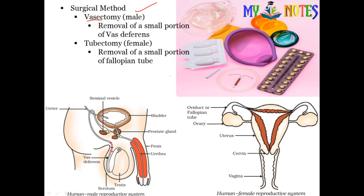The second surgical method is tubectomy, which is performed in females. A small portion of the fallopian tube is cut and tied. The egg is still released but the sperm cannot travel through, and this way we can prevent fertilization.